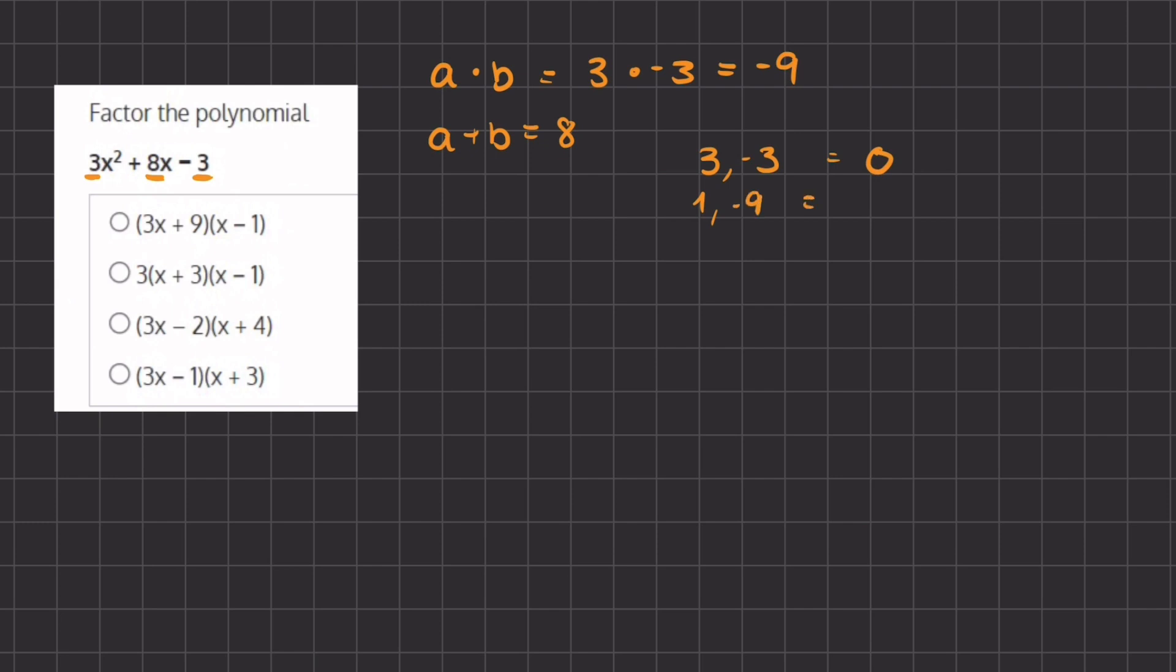So we can switch the negatives and we have a negative 1 and a positive 9, which will give us a positive 8 when we add them together.